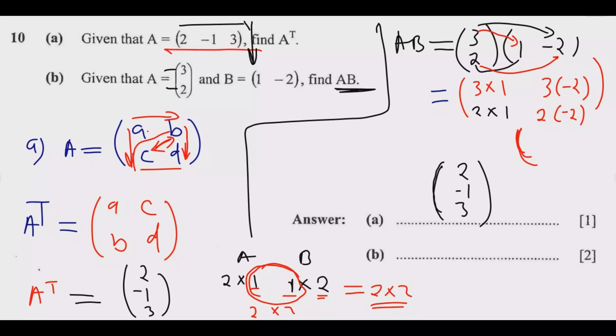Once you simplify this, it will be 3 times 1, which is 3, then 3 times -2, which is -6.